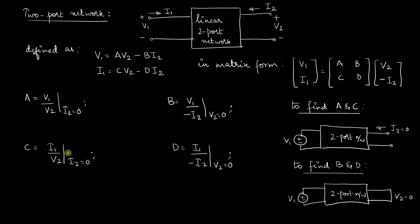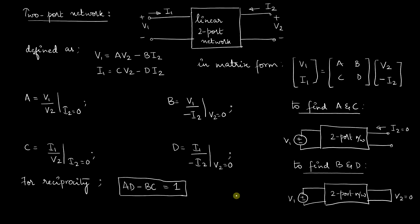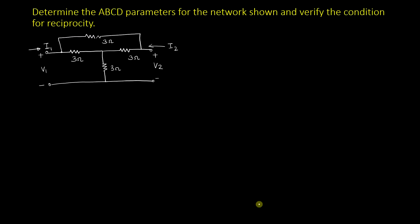For reciprocity, we need to verify the condition AD − BC = 1. There is also the symmetric concept, where you check whether A = D. The reciprocity condition AD − BC = 1 will be satisfied when there are no dependent sources. The problem asks us to determine the A, B, C, D parameters for the given network and verify the condition of reciprocity.